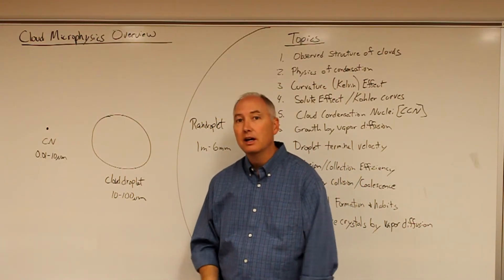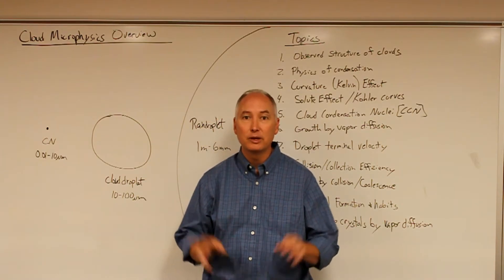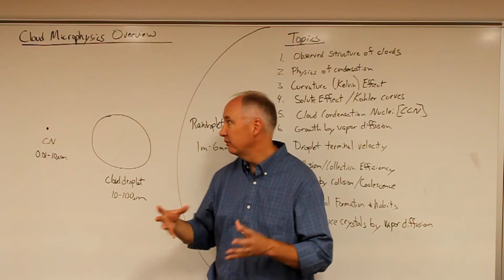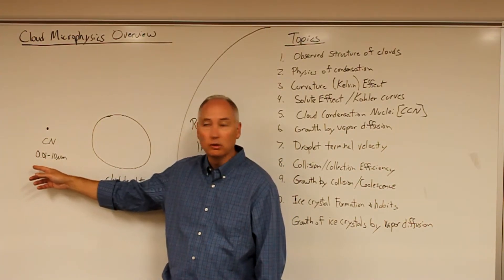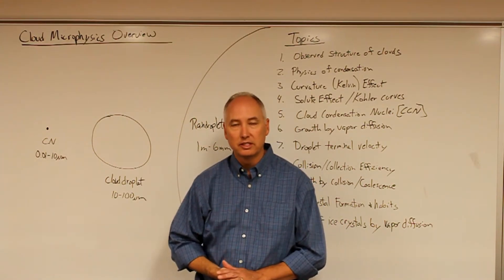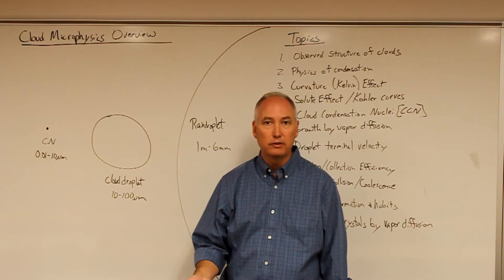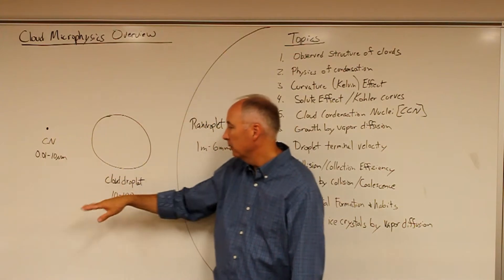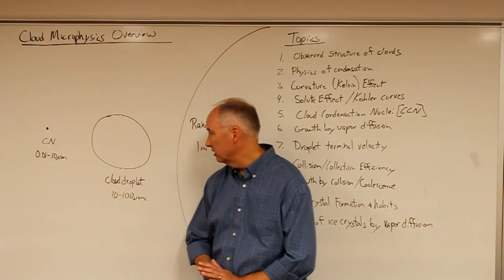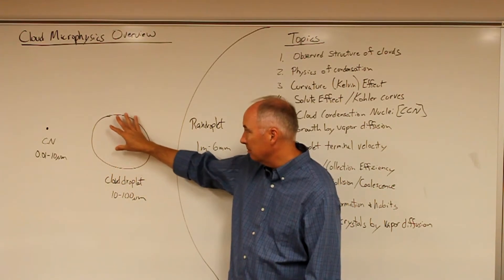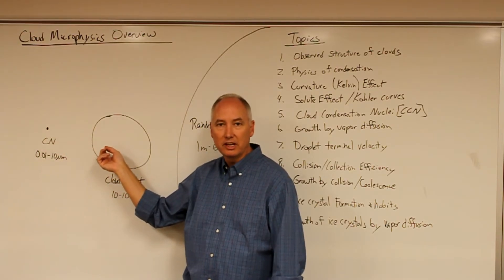In the atmosphere — and in fact in this room — there are particles. We call these particles condensation nuclei because every one of them could theoretically be a seed for a cloud droplet to form. They generally range in size between 0.01 micrometers and 10 micrometers. Particles larger than 10 micrometers have such a high gravitational settling velocity that their lifetime in the atmosphere is only a few hours. By contrast, the droplets in clouds generally range between 10 and 100 micrometers in diameter, composed of liquid water. Every single cloud droplet will have at least one particle inside it that served as an embryo for its formation.